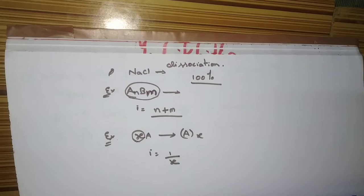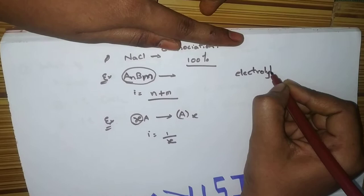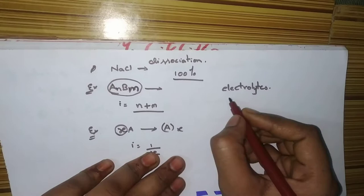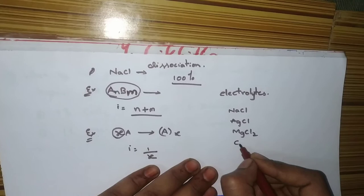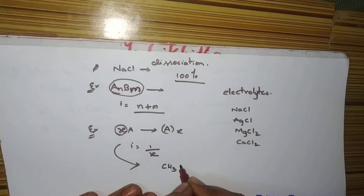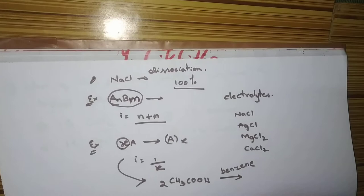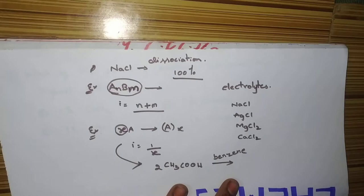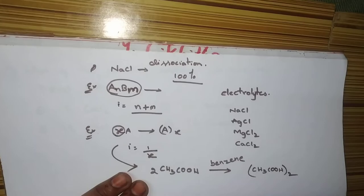So, let's solve the questions. See, I will give examples also. For electrolytes, I am giving NCERT examples. Electrolytes, NCERT examples are like NaCl, AgCl, MgCl2, CaCl2. This will dissociate. And for association, most of the examples are acids. It's CH3COOH. In benzene solution, it will associate. Associate in the sense, it will form a dimer. If trimer is there, 1 by 3. If dimer is there, 1 by 2. That's it.